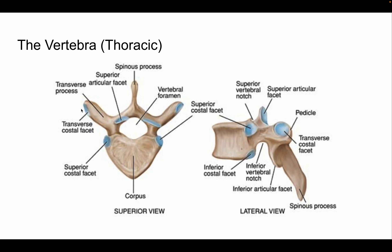Over here we have the transverse costal facet — some anatomy classes call this the facet for the articulating part of the tubercle of the rib, but transverse facet or transverse costal facet are both acceptable. Then we have the superior articulating facet. Both are facets with cartilage associated with them. We also have the vertebral foramen, and the superior costal facet — more accurately called the superior demi facet because it's half a facet. Between the transverse processes and the body of the vertebra, or corpus, we have the pedicles.